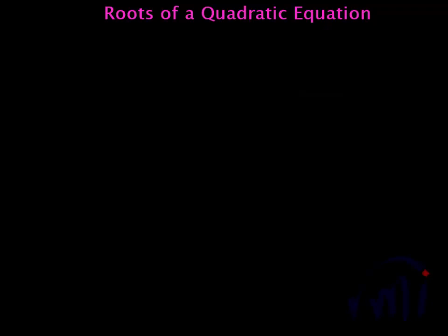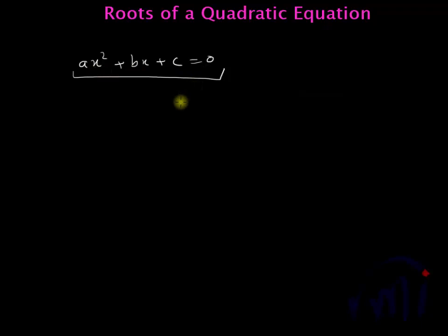In this video we are going to learn how to find roots of a quadratic equation. A quadratic equation is an equation in a single variable where the maximum power of the variable is 2. So equations like ax squared plus bx plus c equal to 0, where a, b and c can be any constants, is called a quadratic equation.